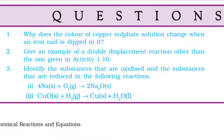Review Questions: (1) Why does the color of copper sulfate solution change when an iron nail is dipped in it? (2) Give an example of a double displacement reaction other than the one given in Activity 1.10. (3) Identify the substances that are oxidized and the substances that are reduced in the following reactions: (i) 4Na (solid) + O₂ (gaseous) → 2Na₂O (solid); (ii) CuO (solid) + H₂ (gaseous) → Cu (solid) + H₂O (liquid).